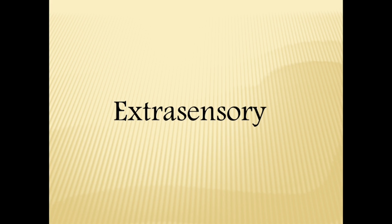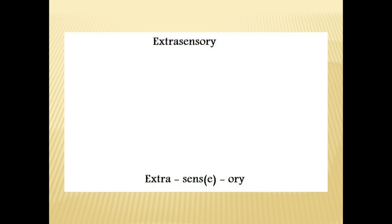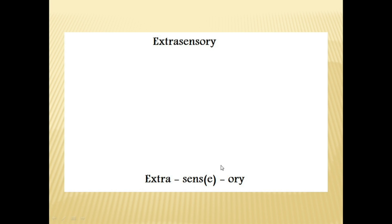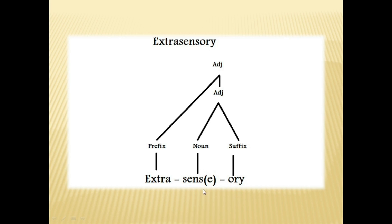We have another word: 'extrasensory'. It is made up of three different morphemes: 'extra', which is a prefix; 'sense', which is the root noun; and '-ory', which is a suffix. When combining the suffix '-ory' with 'sense', it gives us the word 'sensory', which is an adjective. And this adjective 'sensory', when combined with the prefix 'extra', gives us 'extrasensory', which is also an adjective.